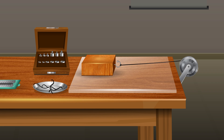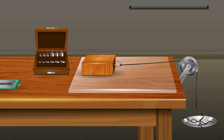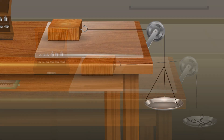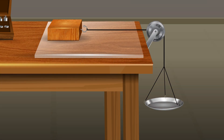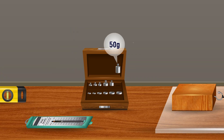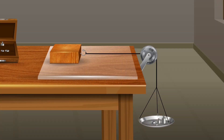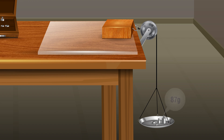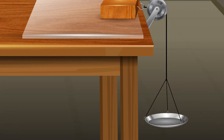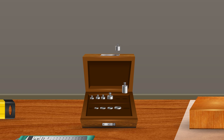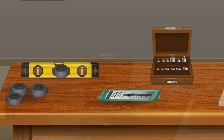Tie one end of the string to the hook attached to the wooden block. Pass the string over the pulley and tie the other end to the pan. Ensure that the portion of the string between the hook and the pulley is horizontal. Put some masses from the weight box on the pan until the block starts to move. Note the mass kept on the pan.